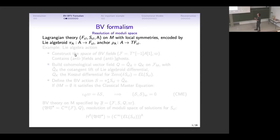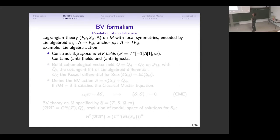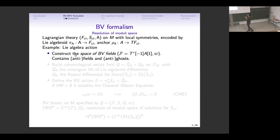For us, a Lagrangian field theory is a space of fields, an action functional, and a Lie algebroid. We want local symmetries to be described by this Lie algebroid, which is a vector bundle with an anchor map. If you don't know what this is, think about a Lie algebra action, where A becomes your Lie algebra times the fields, and the anchor is given by the action. We construct the space of BV fields by adding additional graded fields: ghosts in degree one and higher, and anti-ghosts and anti-fields in negative degree.